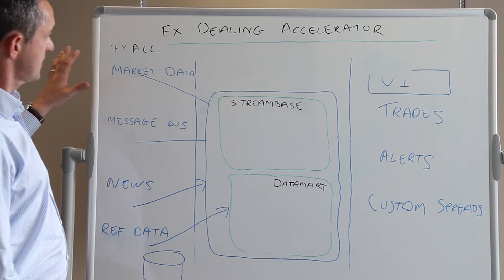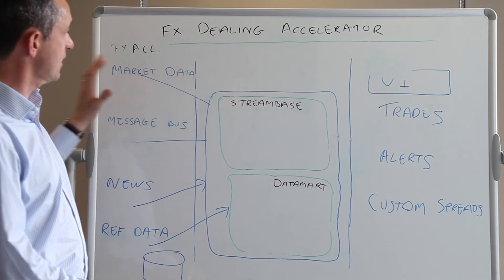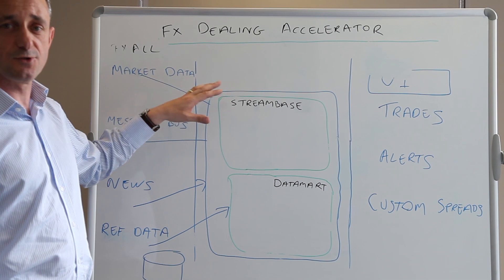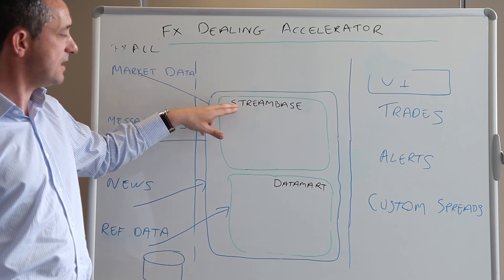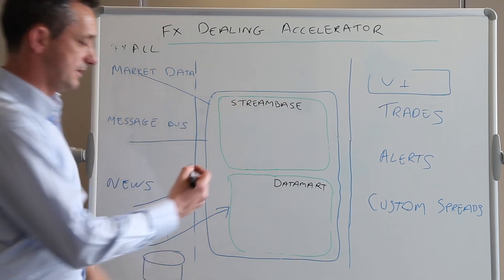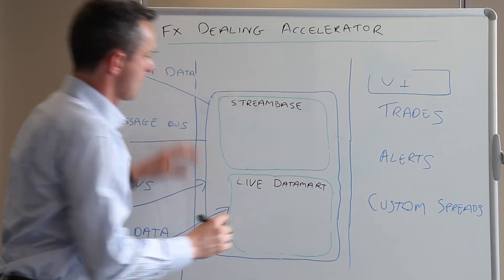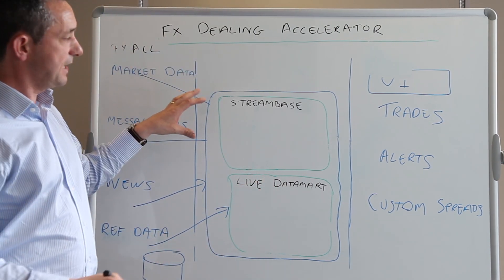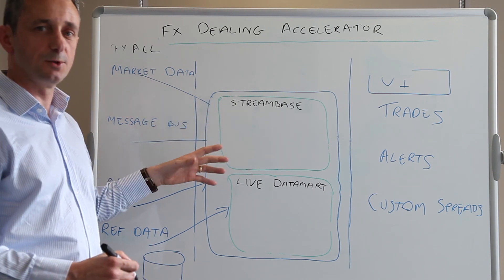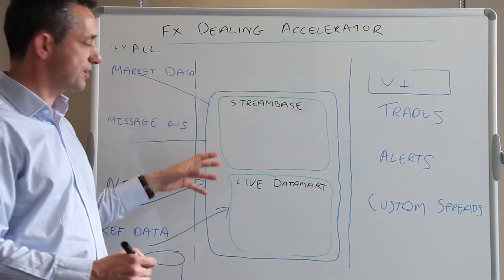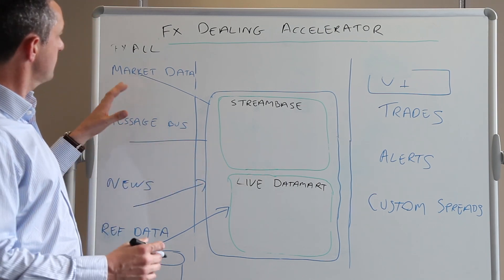So all this data is coming in and we're moving from left to right effectively as real-time data comes in. In the centre we have a stream-based event processing engine and the live data marks, which both ingest this data and enable us to build out our custom prices and also to take action based on the context within that data.